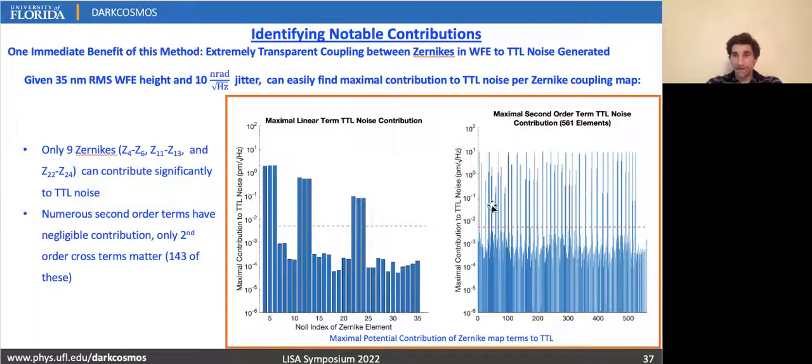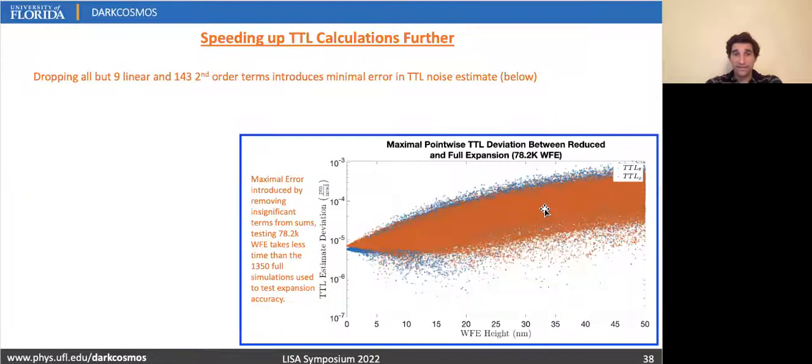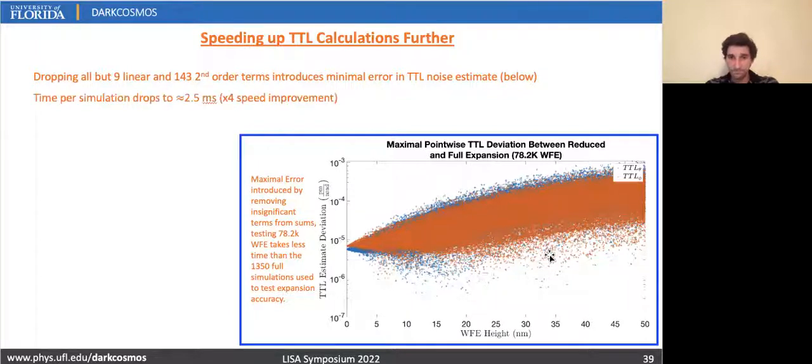For the second order coupling terms, it's not clear here. There's numerous ones that contribute. You can't really see here from this, but it turns out that there's no Zernikes that couple significantly quadratically. All the terms here that matter are cross-couplings between different Zernikes, and only 143 terms matter. And so we can actually drop all but those nine significant linear terms and 143 significant cross-terms because the error in leaving out all other terms is insignificant. It can't even introduce that much noise. And we show that for over 78,000 wavefront errors here, where we've compared the error in leaving out all the terms versus not leaving out all the terms.